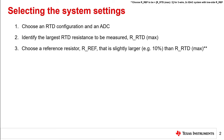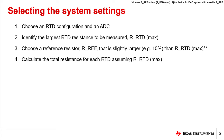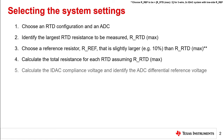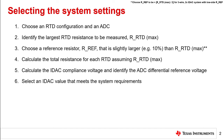However, as noted in the upper right corner, these requirements are slightly different for systems that only measure three wire RTDs using two IDACs and a low side RF. Fourth, calculate the total system resistance for each RTD assuming RRTD Max. The total system resistance includes all resistance in the path between the IDAC output and ground. Fifth, calculate the IDAC compliance voltage and identify the ADC differential reference voltage. These specifications are provided in the ADC datasheet. Sixth, choose an IDAC value that meets the system requirements thus far, including the compliance voltage and the reference voltage.